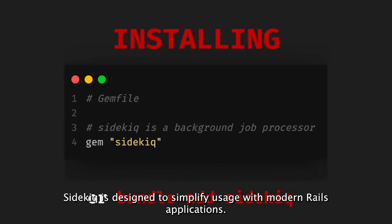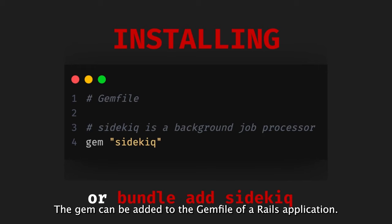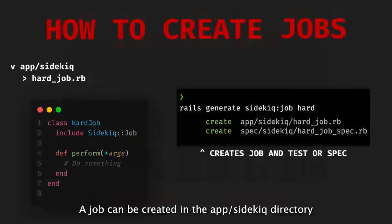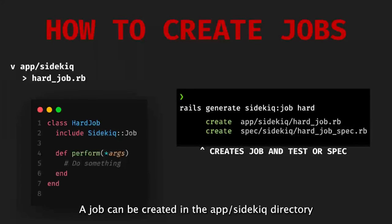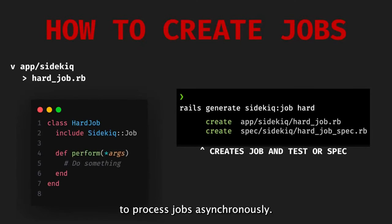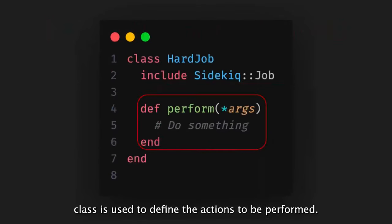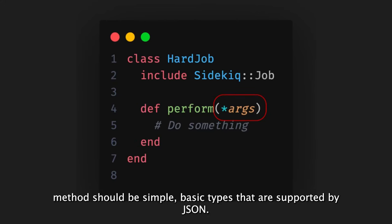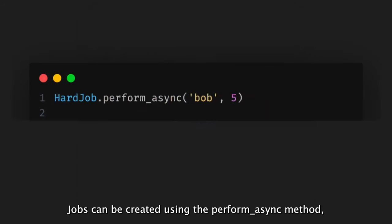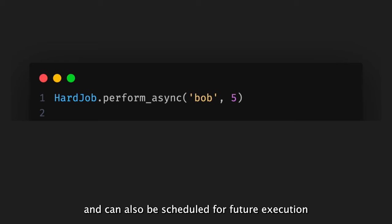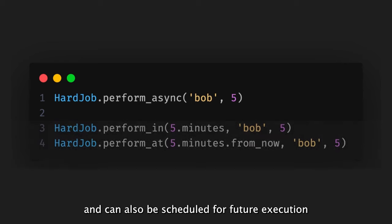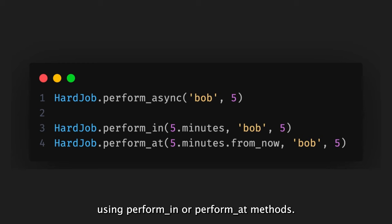Sidekiq is designed to simplify usage with modern Rails applications. The gem can be added to the gemfile of a Rails application. A job can be created in the app's Sidekiq directory to process jobs asynchronously. The perform method in the job class is used to define the actions to be performed. Arguments passed to the perform method should be simple, basic types supported by JSON. Jobs can be created using the perform_async method and can also be scheduled for future execution using perform_in or perform_at methods.